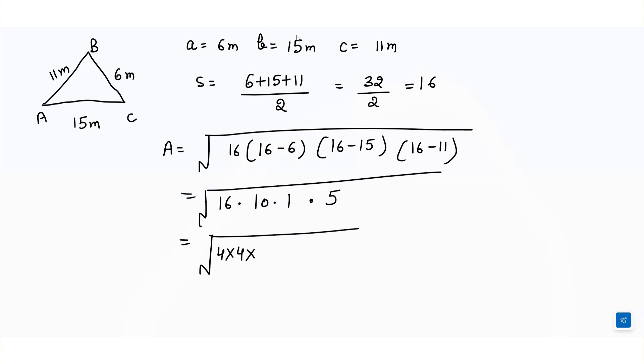Now 4 and 5 are the pairs here, so we write 4 into 5 outside and square root of 2 inside. The answer is 20 square root 2 meter square.